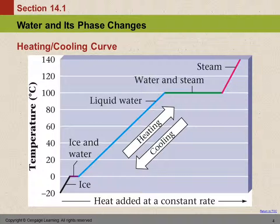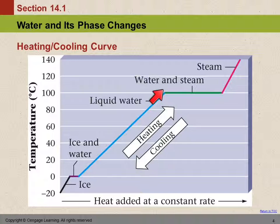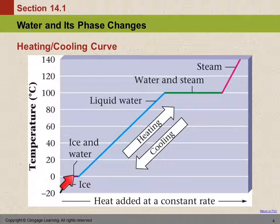The reverse also works. You take steam and cool it down — the temperature goes down until you get to 100 degrees, and it starts condensing. The temperature will stay at 100 degrees until all the water has condensed. Now you have just liquid water, and it cools down. When it begins to freeze, it will stay at zero degrees Celsius until all of it has frozen.